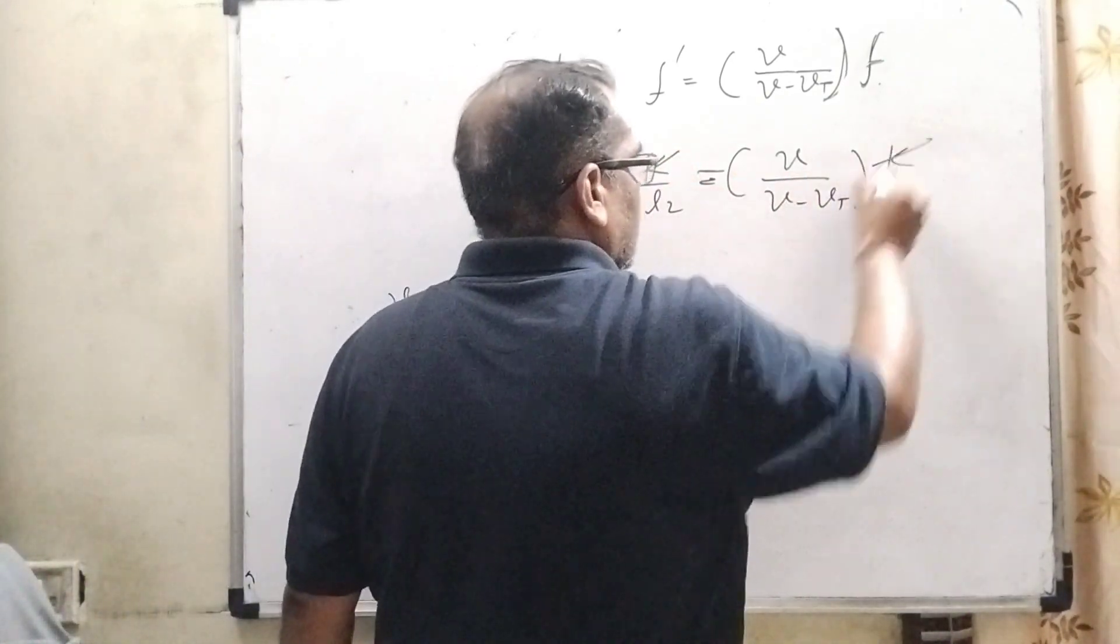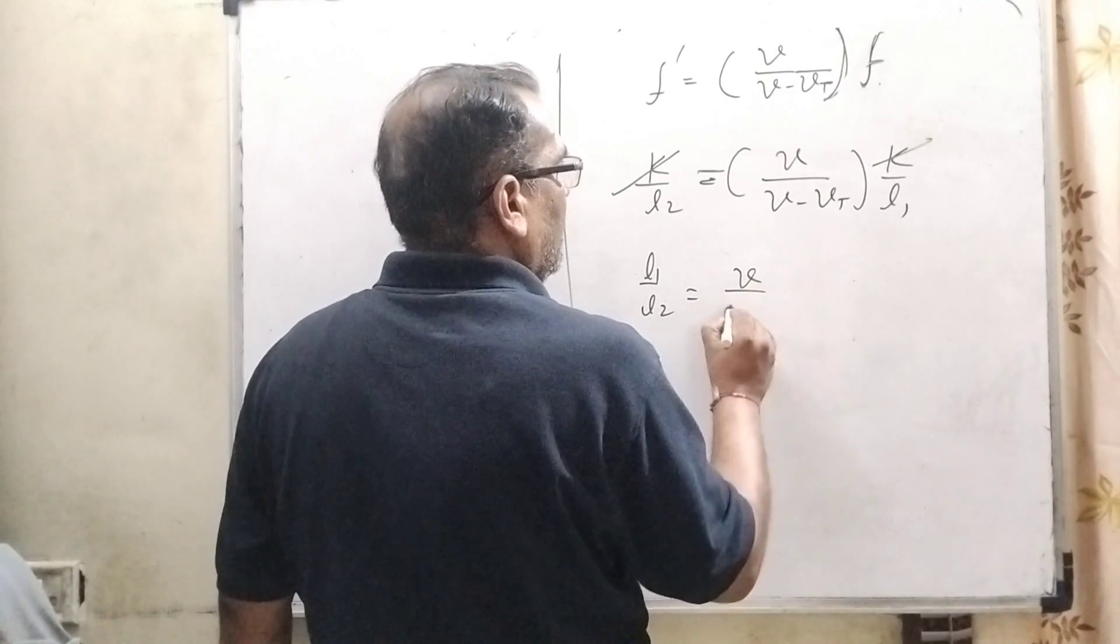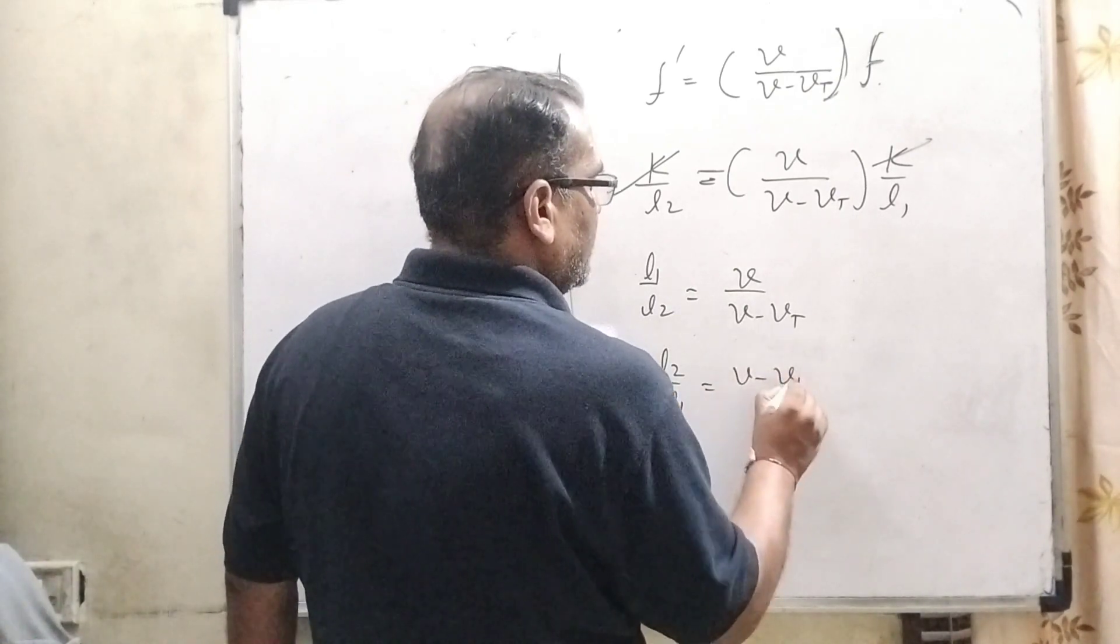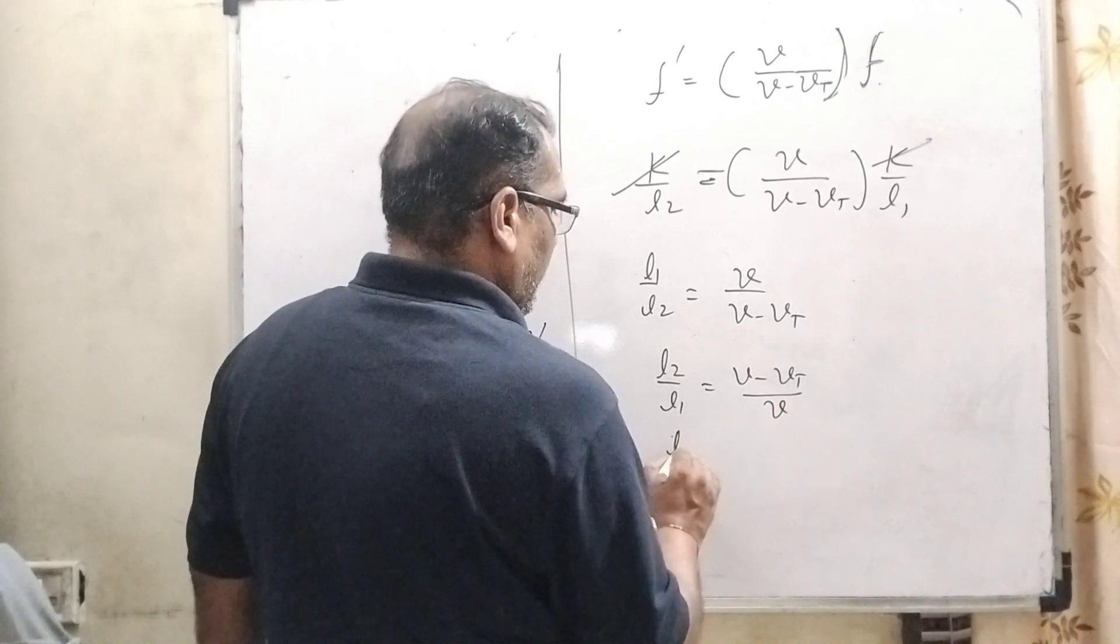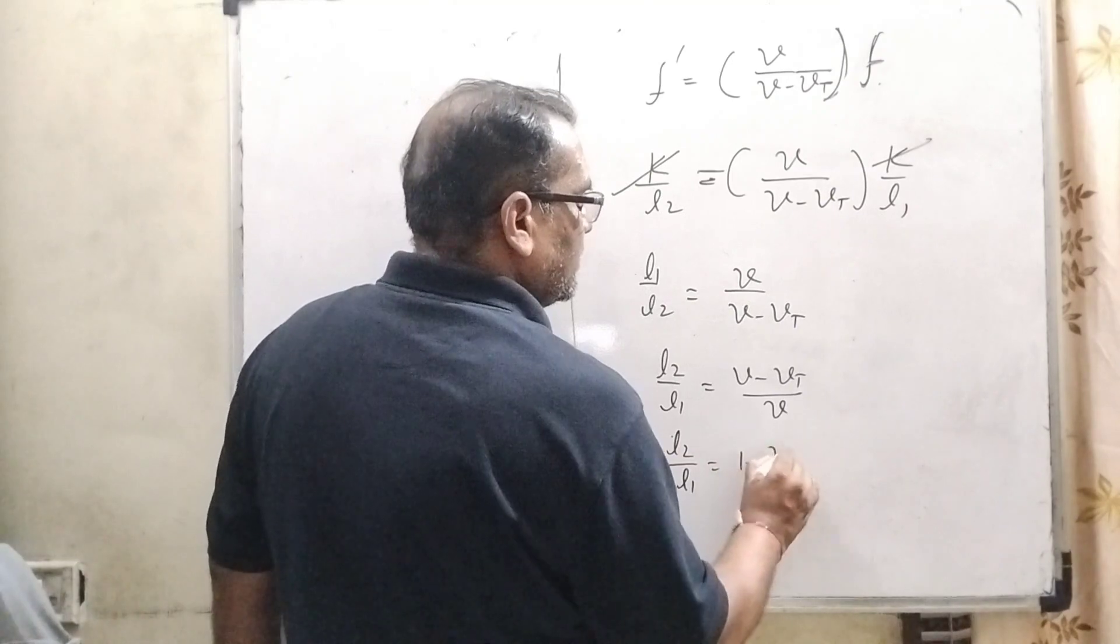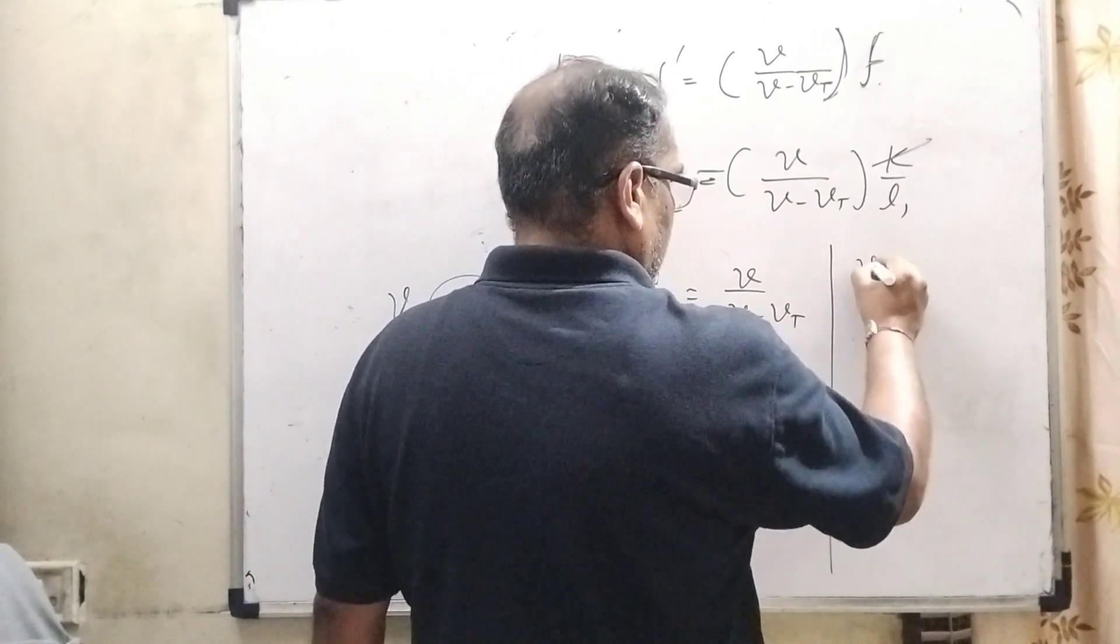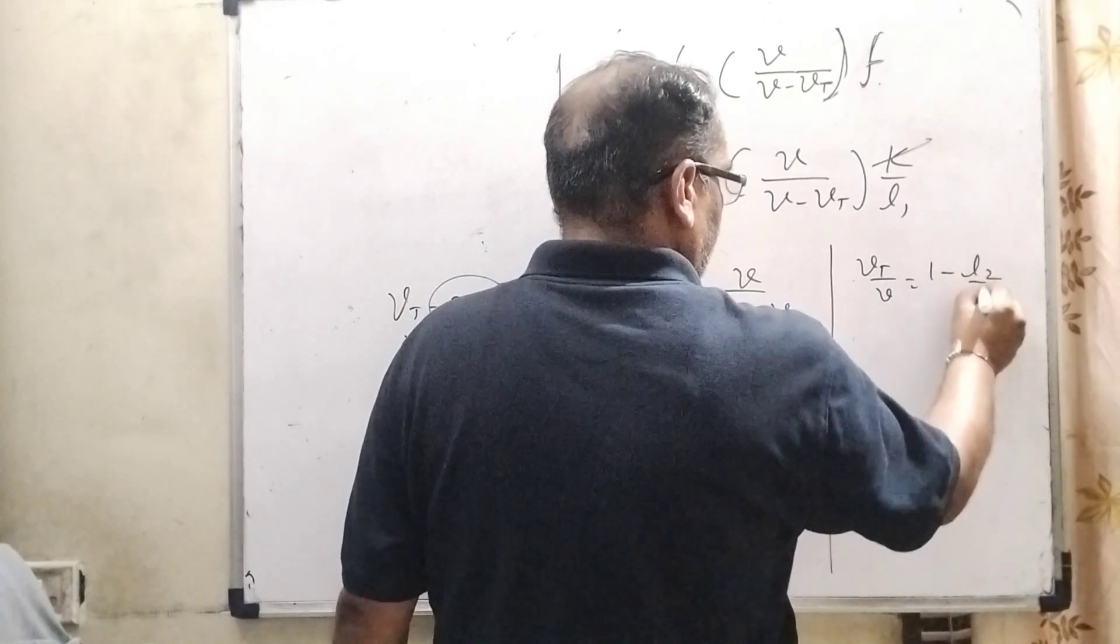Here K cancels out. L1 upon L2 equals V by V minus VT. Then it can be written as L2 by L1 equals V minus VT by V. This can be written separately as L2 upon L1 equals 1 minus VT upon V.